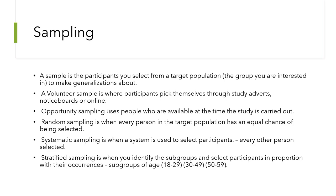There's also opportunity sampling, which uses people who are available at the time of the study. For instance, you might walk into a student coffee room and ask if anyone wants to help with a study, perhaps offering money or credit points — essentially finding an opportunity sample.